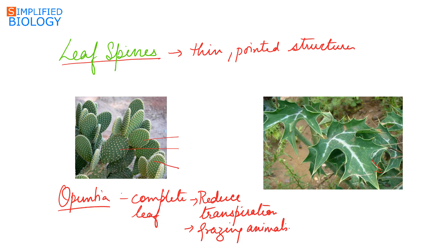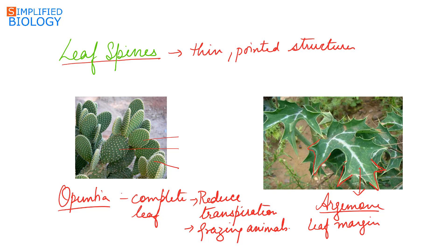In this case, Argemone, that is prickly poppy, the leaf margin gets modified into spines. These are the leaf margins that get modified into the spine, protecting the plant from grazing animals.